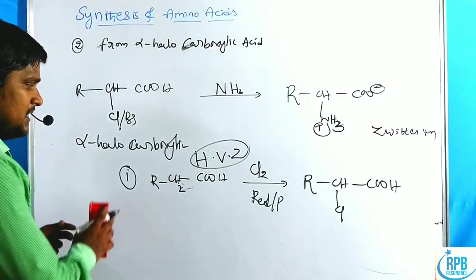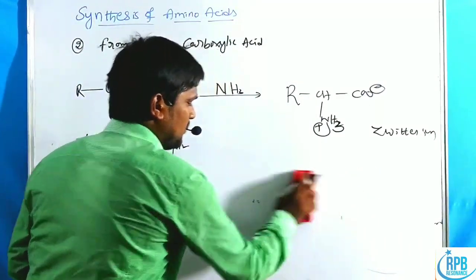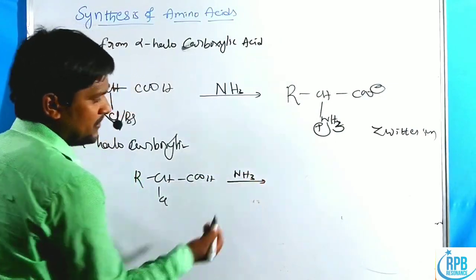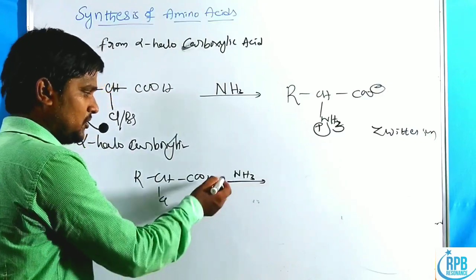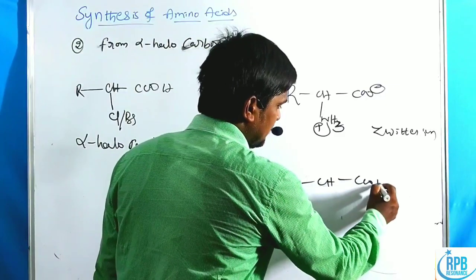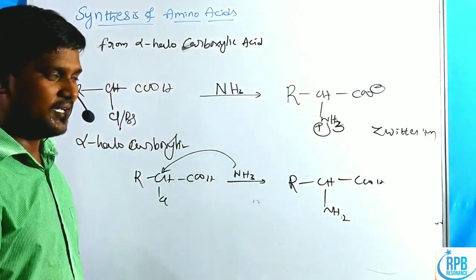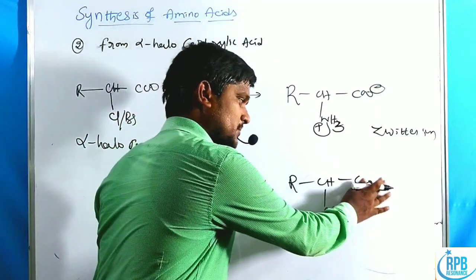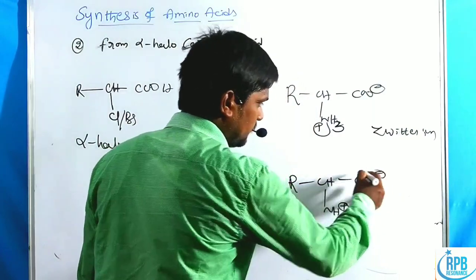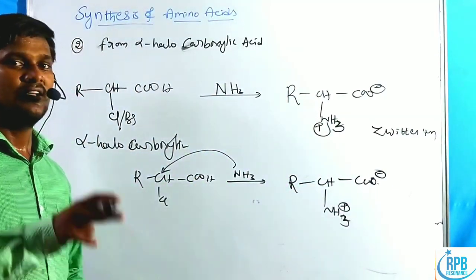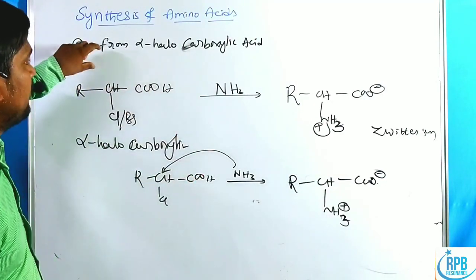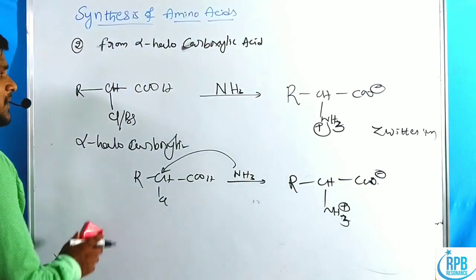Step two: after preparing the alpha halo carboxylic acid, we treat it with excess ammonia. One ammonia molecule undergoes nucleophilic substitution at the halo position to give R–CH(NH₂)–COOH. Since ammonia is basic, it abstracts a proton from the carboxylic acid, giving NH₃⁺ and COO⁻ — the zwitterion form.